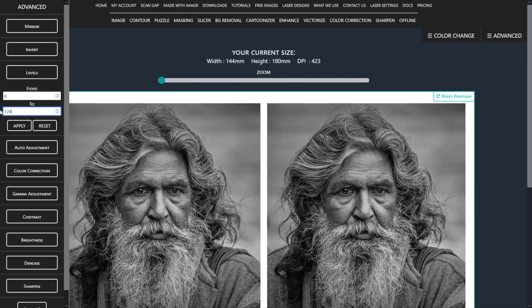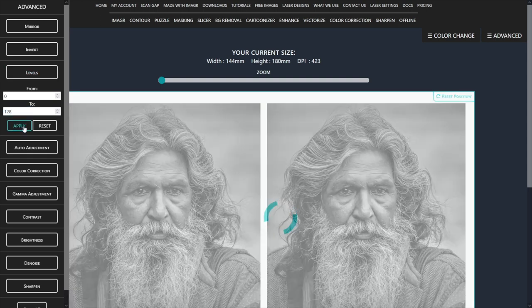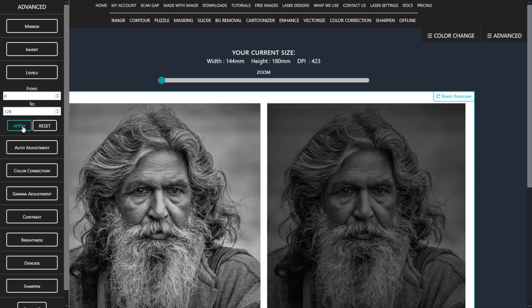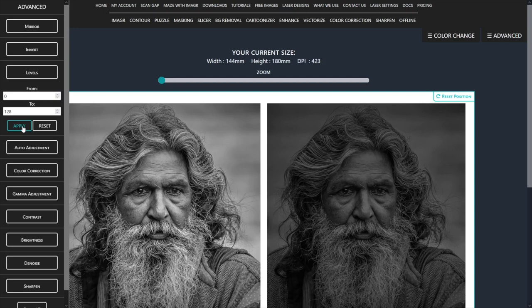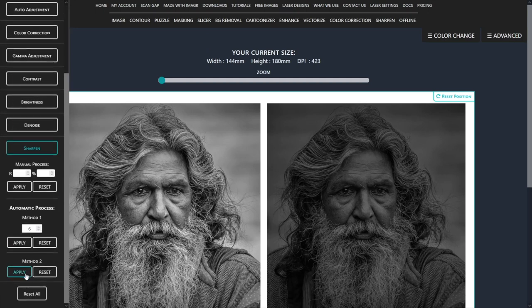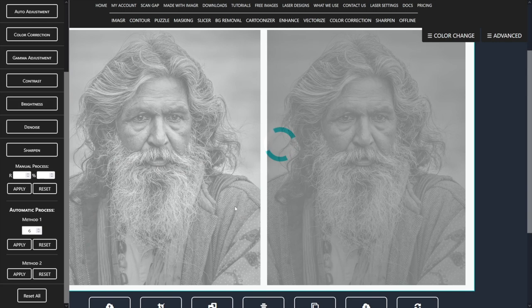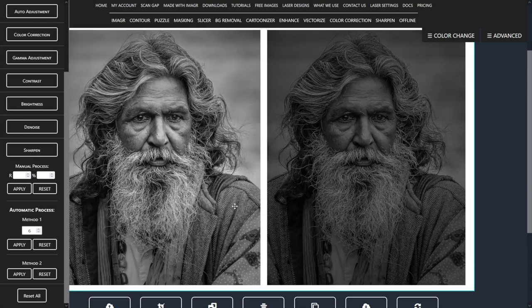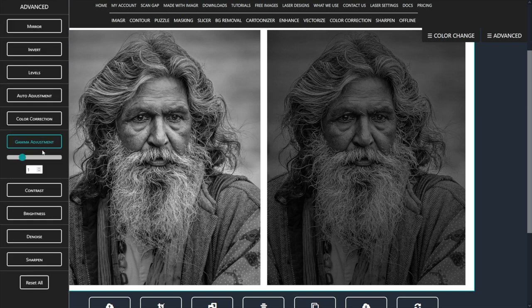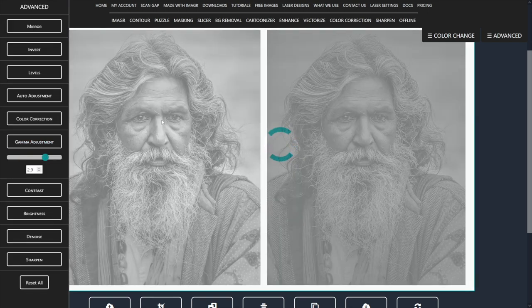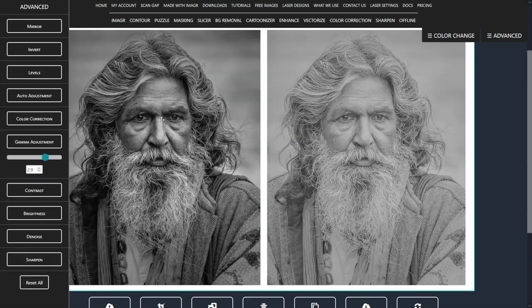The image appears much darker now but we will fix this in a second. I will apply sharpen method 2 to increase the details in the image. Since the image will be very dark right now, I will increase the gamma value to brighten up the darks while keeping the whites.